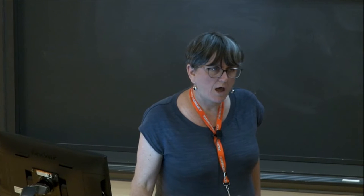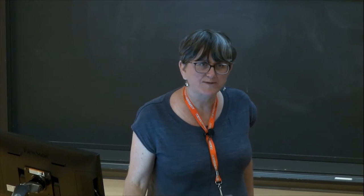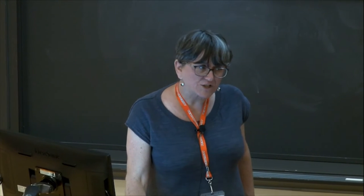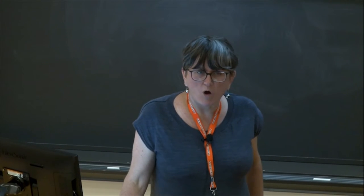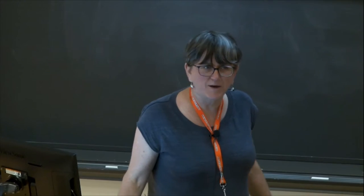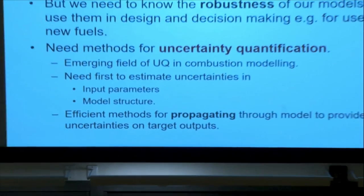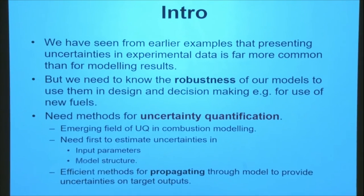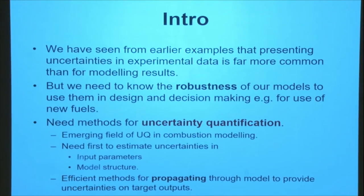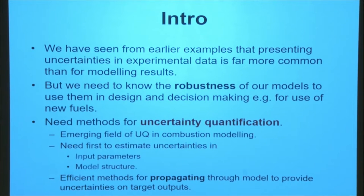I think it's fair to say that if we see experimental data in a paper, or even in a student assignment, we expect to see some error bars on that data. It's very unusual to see experimental data without some estimation of the uncertainties involved. But most of the time, when we see modelling in papers, we see experimental data with error bars and then we see a line which is the model going through that data. We're just eyeballing and saying, well, how good do we think our model is? Is it close to the symbols or within the error bars? But we don't very often actually see error bars on the model itself.